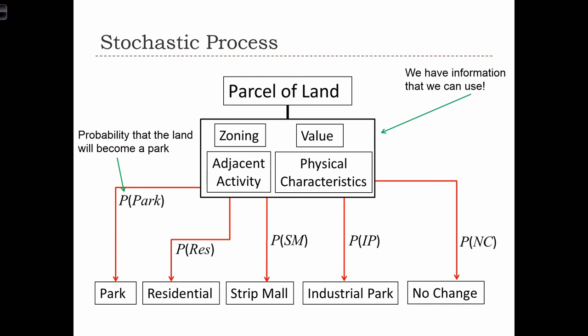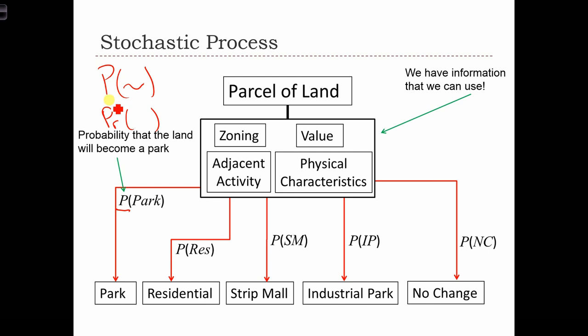Here we use the notation P for probability. So P(park) is pronounced 'the probability of the land being converted into a park.' P(res) is the probability of the outcome being residential land, and so on. We use the notation P and some event to represent the words 'the probability of this event occurring.' Sometimes you'll see notation with P little r — it basically means the same thing. These two are interchangeable.